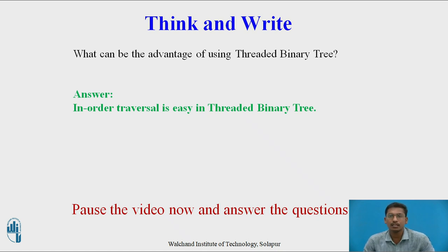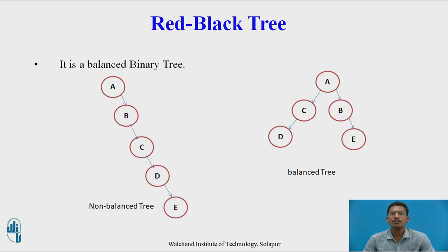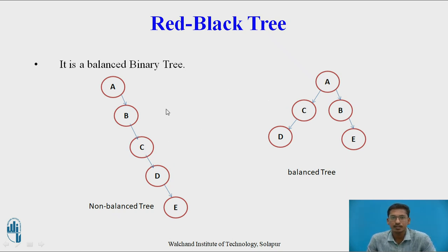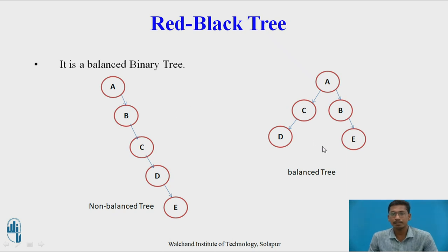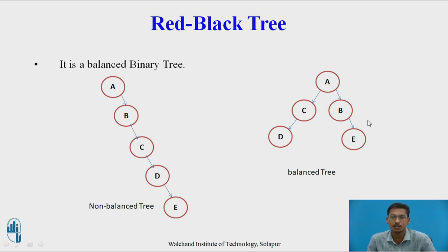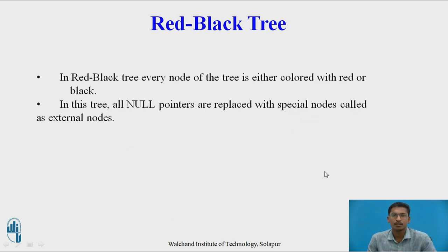Now we will see what is a red-black tree. Before going to red-black tree, we will see what is a balanced tree and what is a non-balanced tree. There are two trees shown — one is not balanced and one is balanced. The advantage of a balanced tree over a non-balanced tree is that the time complexity for searching is less. For example, to search for node e in the non-balanced tree requires five comparisons, but in the balanced tree only a maximum of three comparisons are required. This is the advantage of a balanced tree.